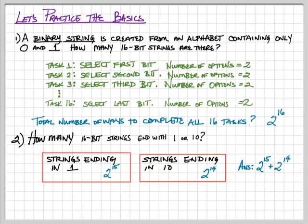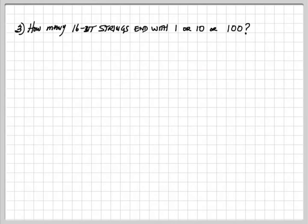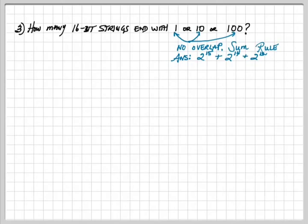Variations on a theme. 16-bit strings that end with 1, 1, 0, or 1, 0, 0. These, again, are disjoint events, so we simply need to add up how many end with a 1, how many end with a 1, 0, and how many end with a 1, 0, 0. That's going to be the sum of 2 to the 15th, 2 to the 14th, and 2 to the 13th.